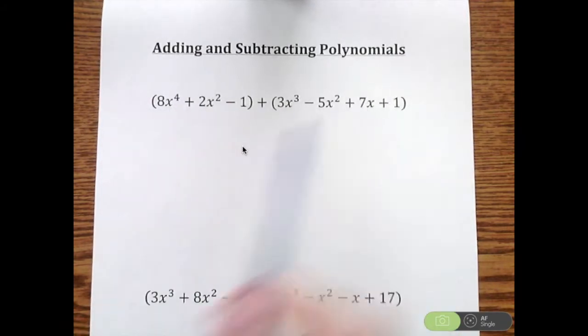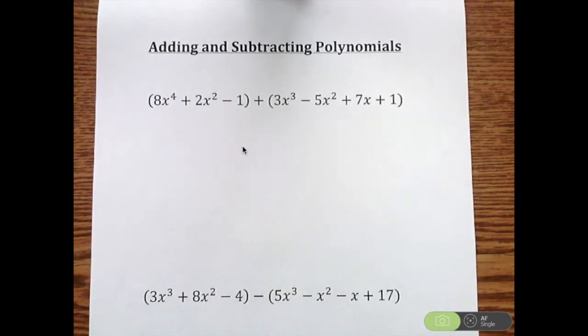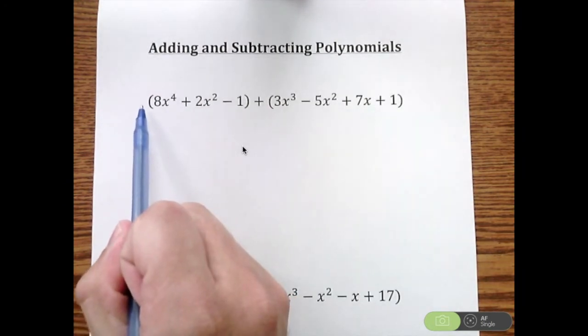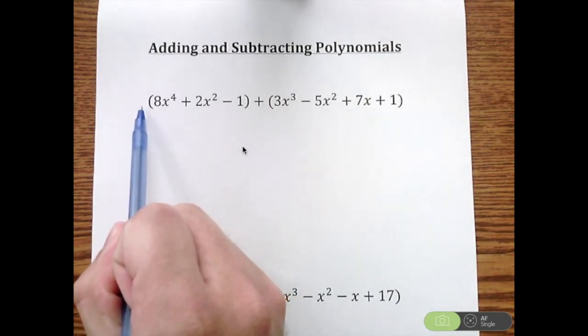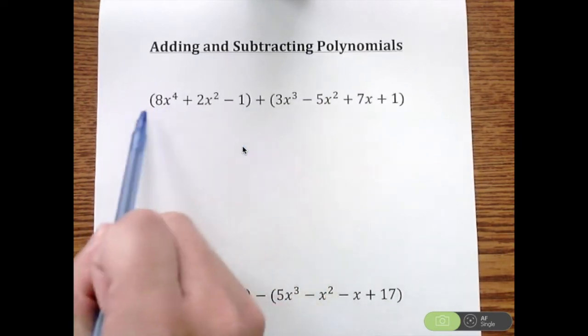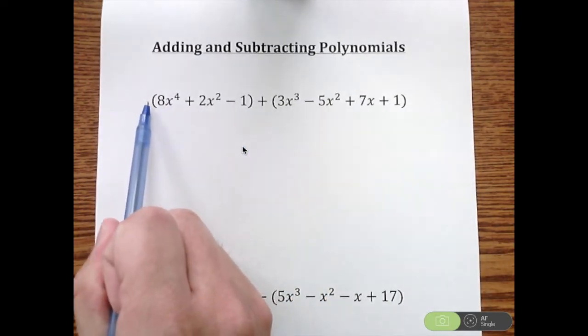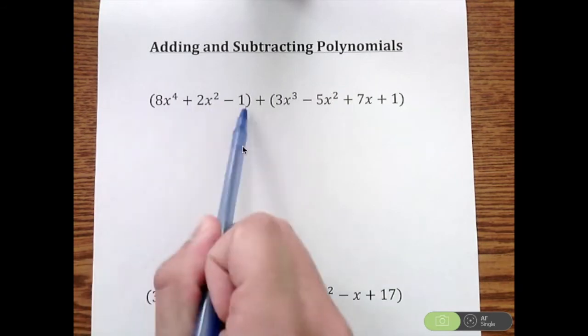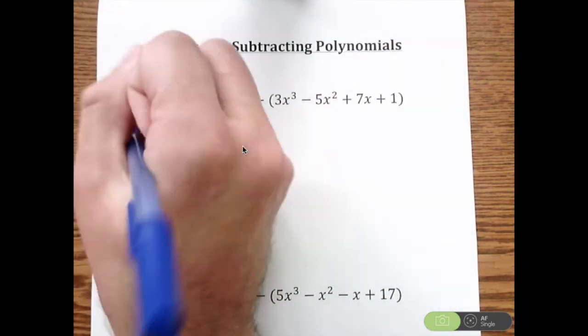This is the general form of how these problems are presented. The first thing I look at is, is there anything out front of each parentheses that we're multiplying through? So this one, even though it looks like there's nothing there, it's just the number one. If you multiply one by anything, you're going to get the exact same thing.